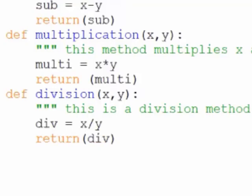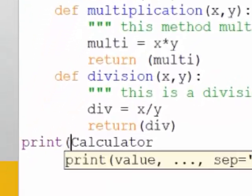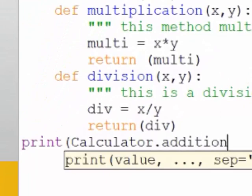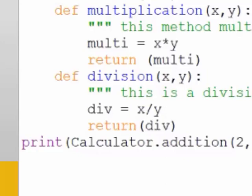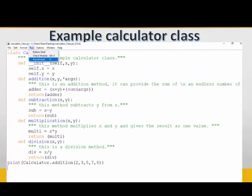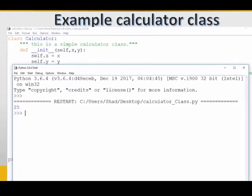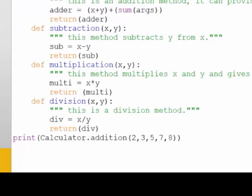In order to run a method inside the class what you've got to do is to write down print and in between parentheses name of the class which is calculator here dot the name of the method and in parentheses you write down the data that you have. Here we pass several numbers so that we add them together. Upon running it we'll get the sum of all of the values that have been entered which is equal to 25. You can do the same thing for the other methods which were subtraction, multiplication and division.